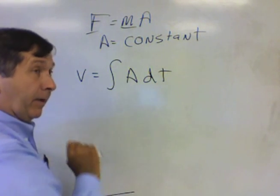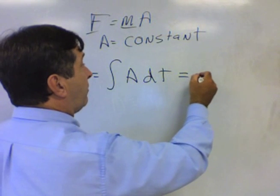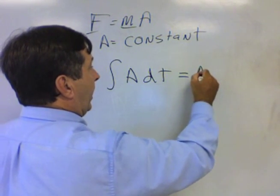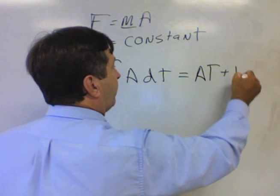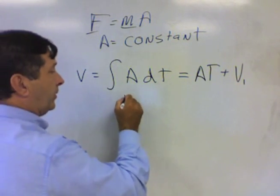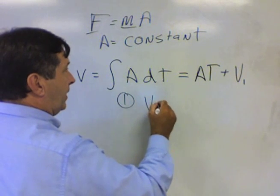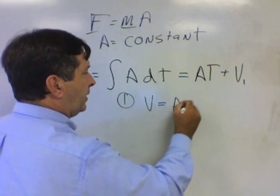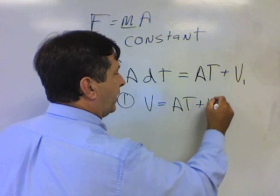If A is a constant, that integral is equal to At plus v initial. This is our first kinematics equation. Velocity equals acceleration times time plus v initial.